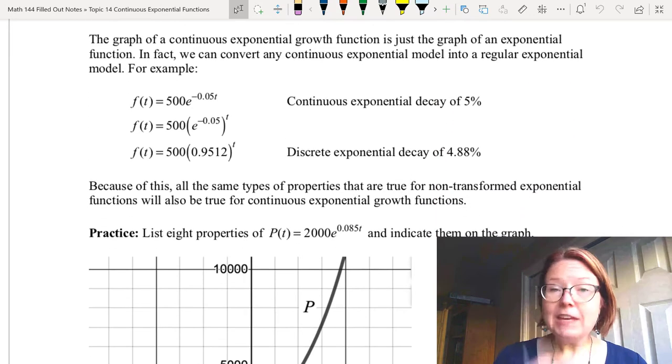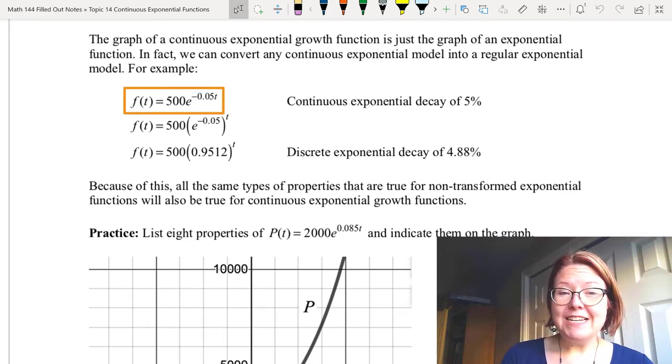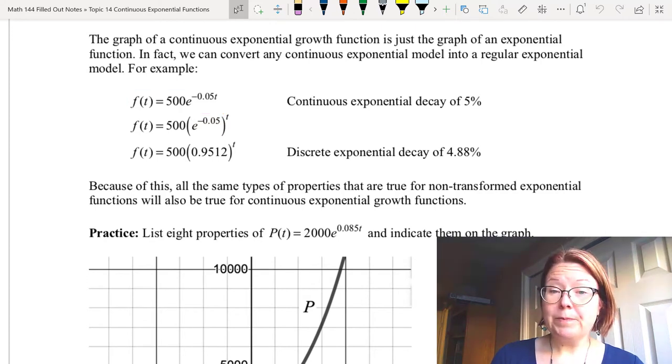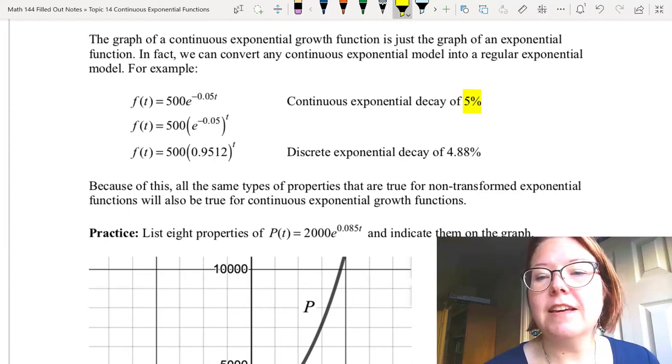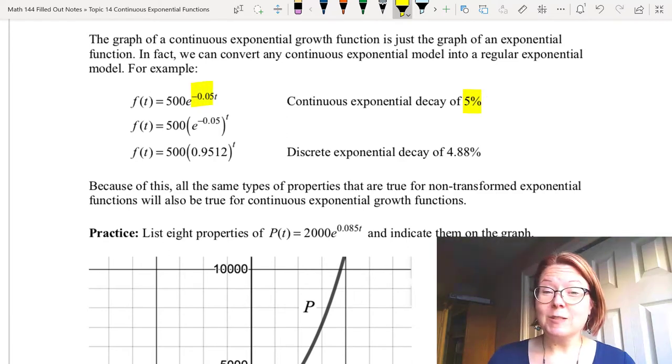For example, if we start with f(t) equals 500e to the negative 0.05t power, this is a model with a continuous exponential decay of 5%. I'm going to highlight that there. That is the negative 0.05 in the exponent.